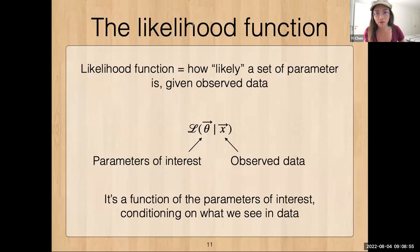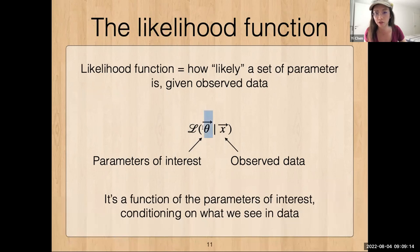The likelihood function basically encodes how likely a set of parameters is given some observed data. It's a function of the parameters of interest — in this case the theory parameters that we want to learn — and we input some observed data, for example how many counts, what's the distribution of momentum, and so on.